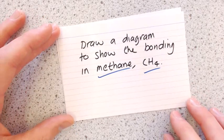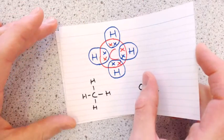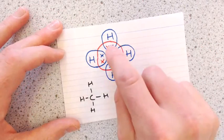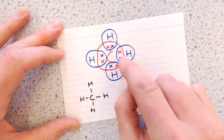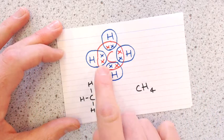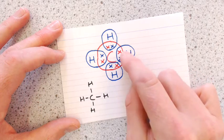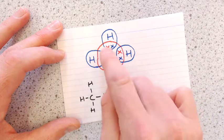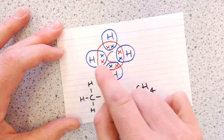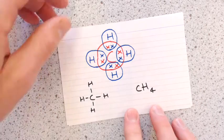Methane, CH₄: very similar to ammonia, except carbon only has four electrons in its outer shell. So it needs to form four covalent bonds, pairing each of carbon's four electrons with an electron from a hydrogen atom.